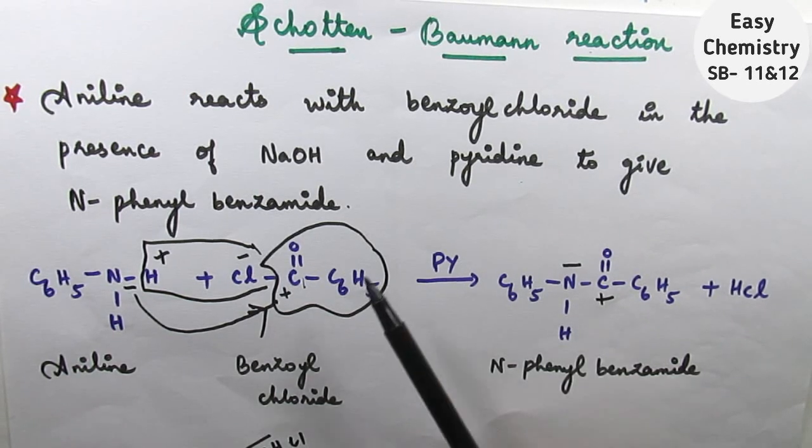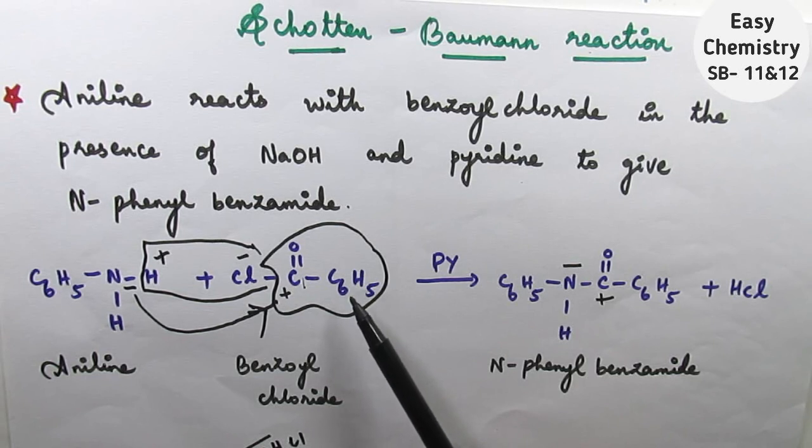Suppose C6H3. Acetyl chloride. You will get the product. N. Phenyl. Acetamide.